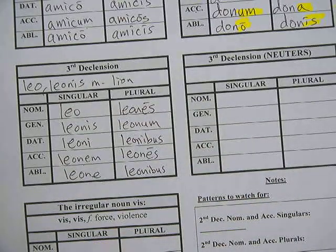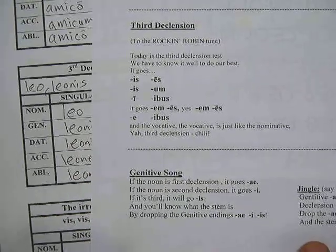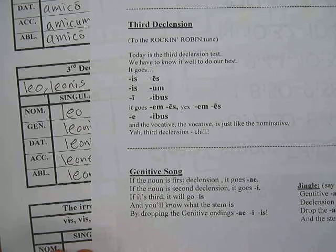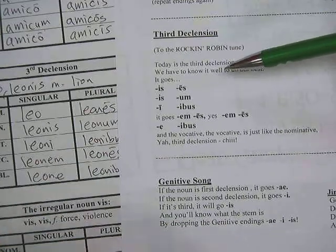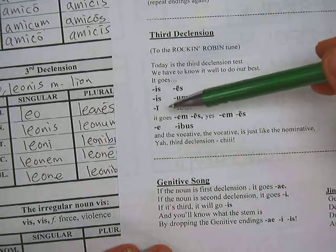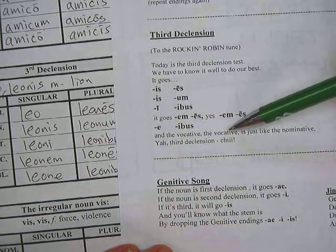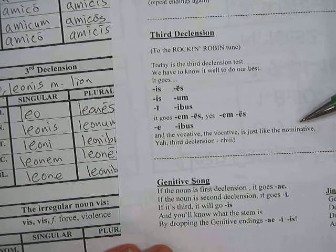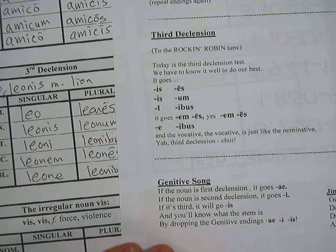One thing I didn't mention in the other third declension video, but I'm going to put here — there is a song for the third declension, which is one of my favorites: Rockin' Robin. It goes like this: 'Today is the third declension test, you have to know it well to do our best.' It goes: is, ace, is, um, e, e, bus — it goes m, ace, yes, m, ace, a, e, bus. And the vocative — the vocative — it's just like the nominative. Yeah, third declension!